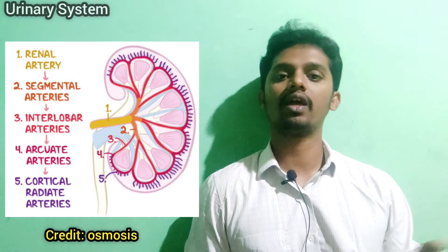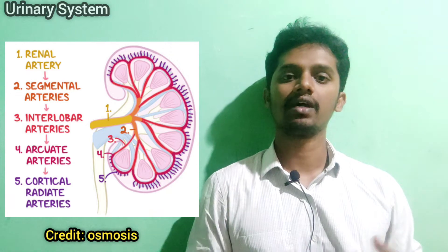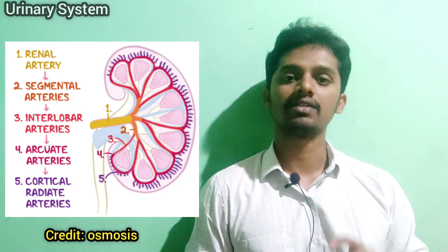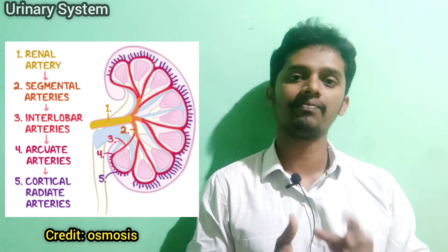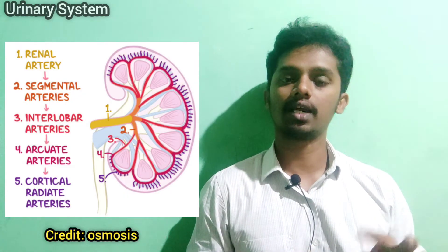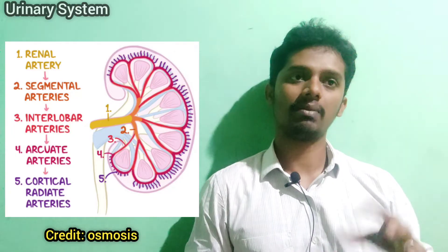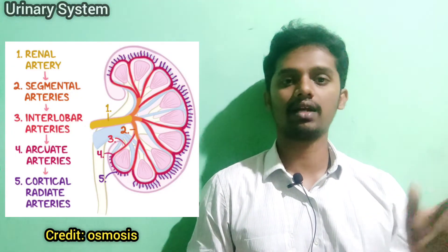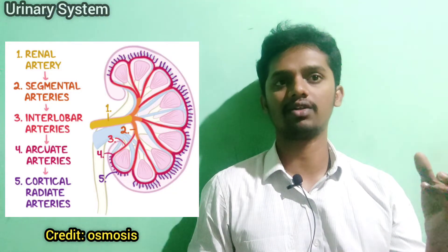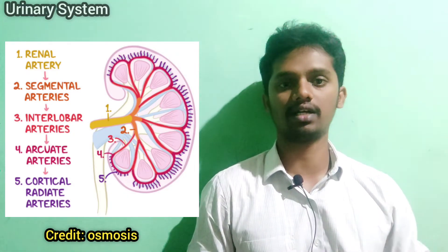The renal artery enters and divides into branches: first into segmental arteries, then into interlobar arteries, then into arcuate arteries, and finally into smaller arterioles. In these final arterioles, waste substances, fluid, and excess materials from the blood are filtered — that is where urinary filtration begins.